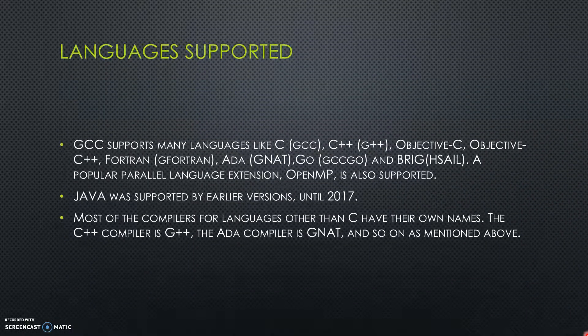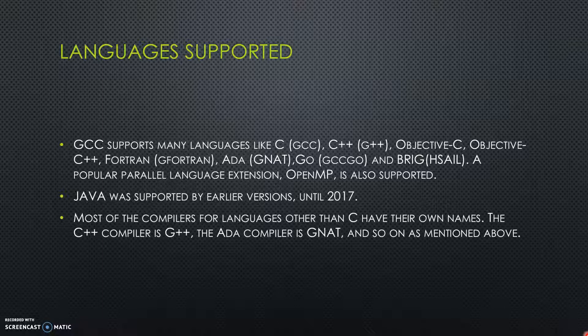The GCC compiler suite supports a lot of languages like C, C++, Fortran, Ada, Go, Objective-C, and Objective-C++. Earlier versions even supported Java, but since 2017 the Java compiler is no longer maintained and updated. Newer updates have added support for more languages, for instance, the DLANG programming language.